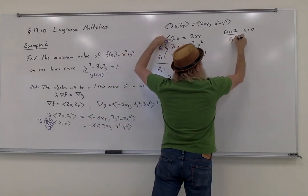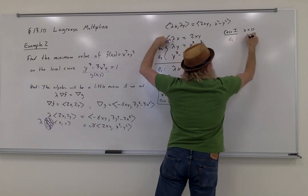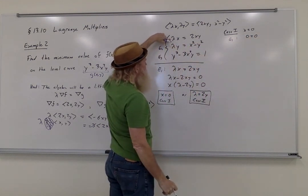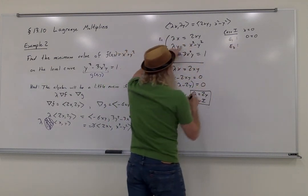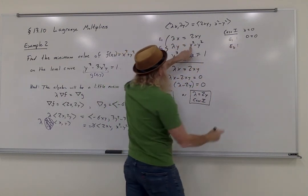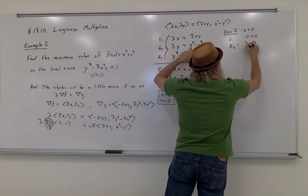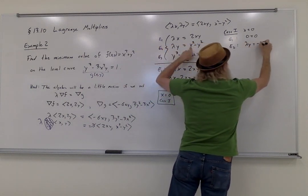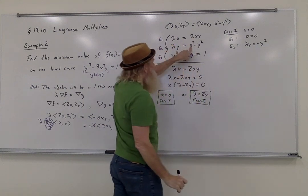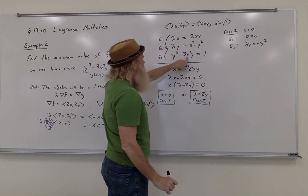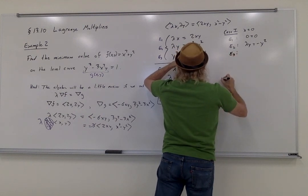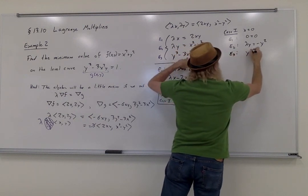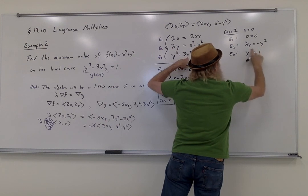Plugging into equation 1, I just get that 0 equals 0. Not very interesting. Equation 2, when I replace x with 0, I get that lambda y equals negative y squared. And plugging x equals 0 into the third equation, I get that y cubed equals 1.